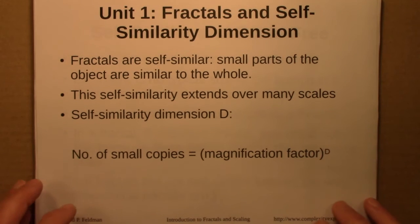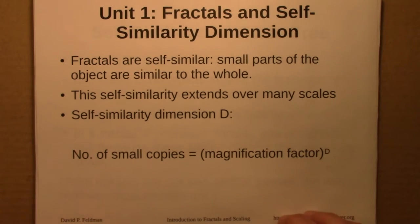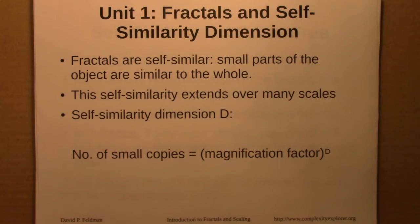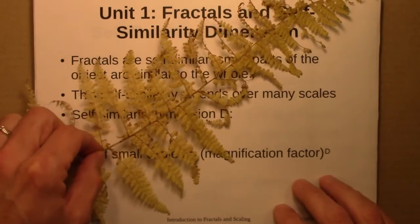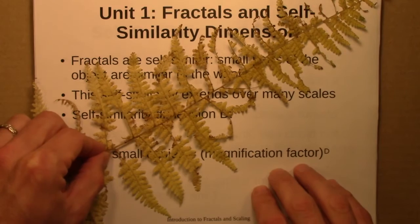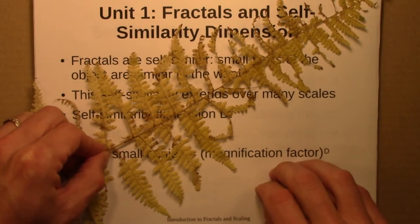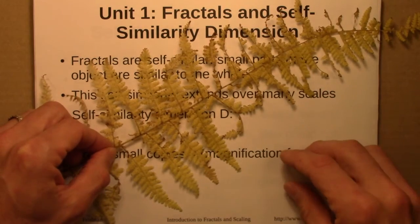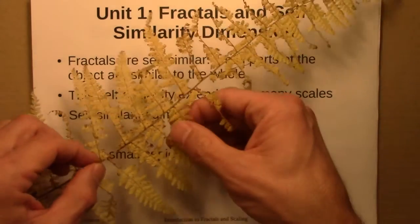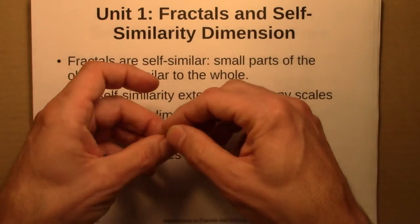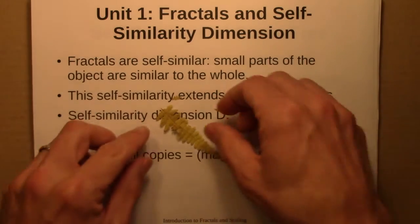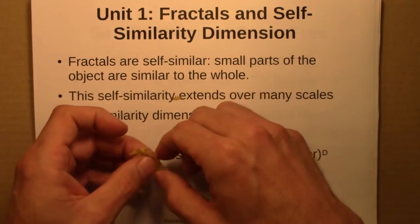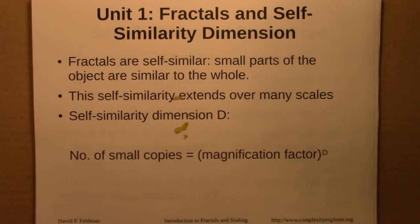We said fractals are objects that are self-similar: small parts of the object are similar to the whole, and that this self-similarity extends over many scales. An example of a fractal was a fern. If you have a fern and you break a part off, you get a fern, and that fern looks like it's itself made up of little ferns, and so on.